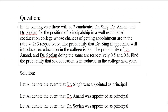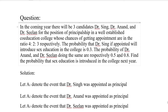Today we are going to learn a new problem in probability. In the coming year there will be three candidates — Dr. Singh, Dr. Anand, and Dr. Seelan — for the position of principalship in a well-established co-education college, whose chances of getting appointment are in the ratio 4:2:3 respectively. The probability that Dr. Singh, if appointed, will introduce sex education in the college is 0.3, and for Dr. Anand and Dr. Seelan respectively 0.5 and 0.8. Find the probability that sex education is introduced in the college next year.